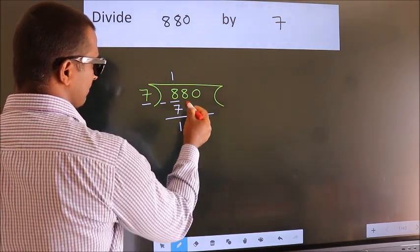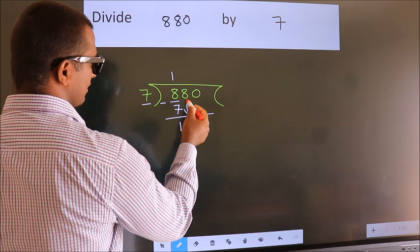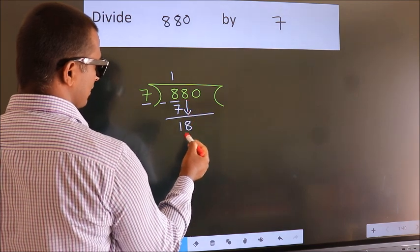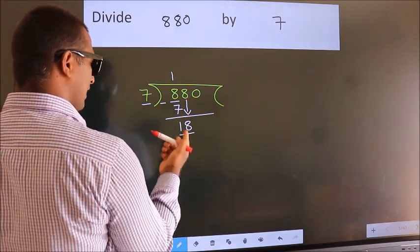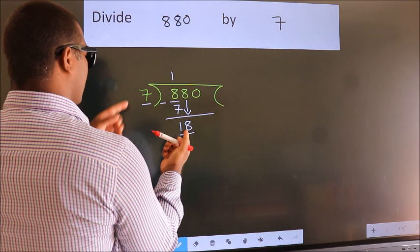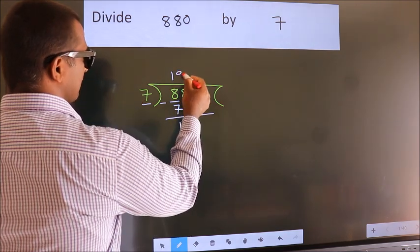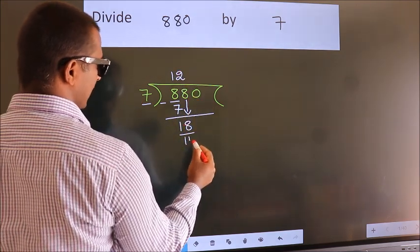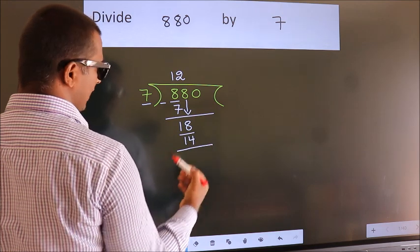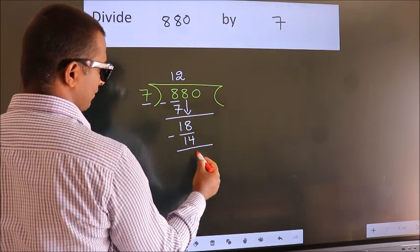After this, bring down the beside number. So, 8 down. So, 18. A number close to 18 in the 7 table is 7 twos 14. Now we subtract and get 4.